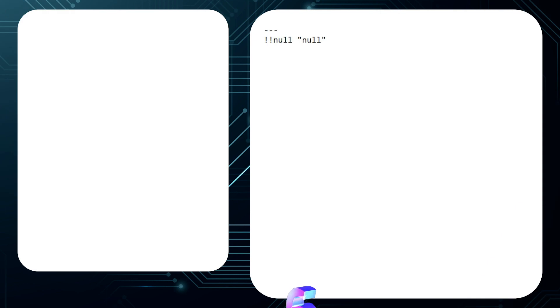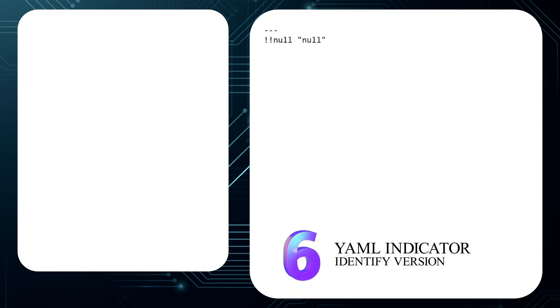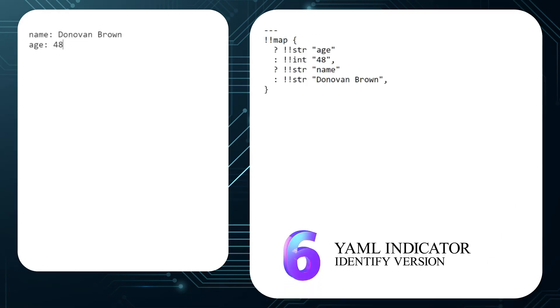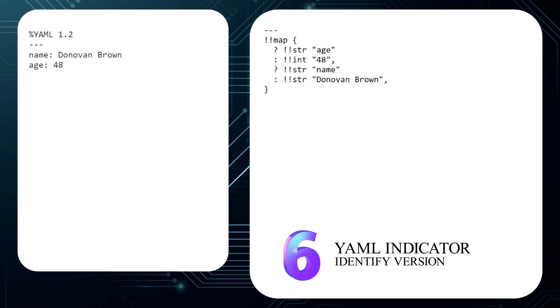Number 6: You can identify the version of YAML using a directive at the top of the file. For example, you can start a document with %YAML 1.2 to denote that this document supports version 1.2 of the YAML spec.